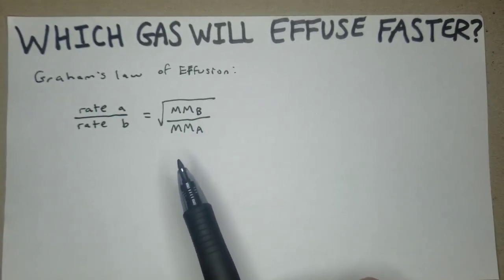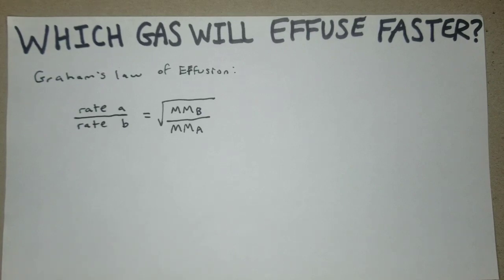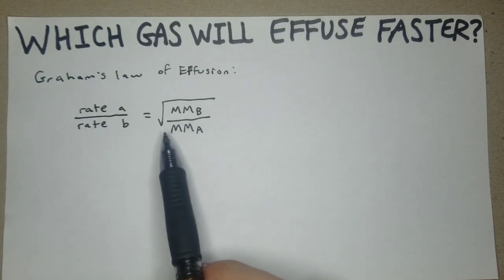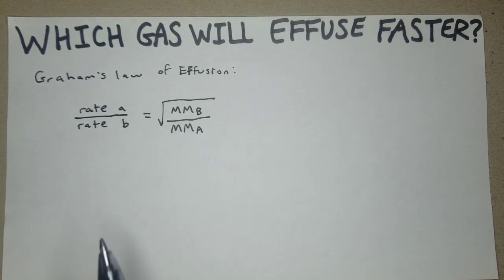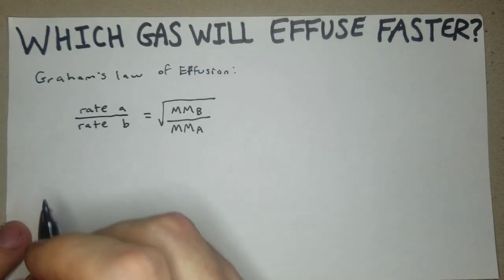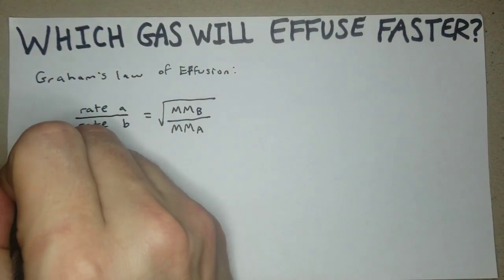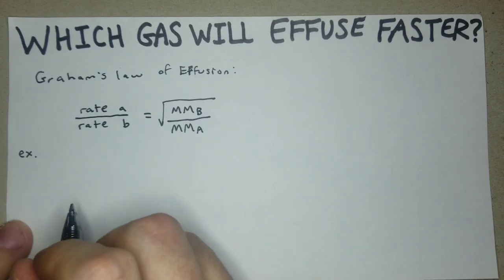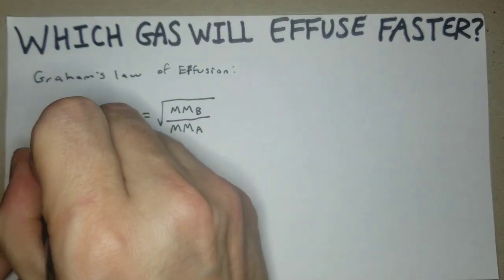Essentially what's going on here is that lighter gases or gases with a lower molar mass will move faster or they'll effuse quicker. So what this equation does is we can use this to figure out how much faster one of them effuses than another. These problems are really pretty straightforward, they sound a lot more complicated than they are.